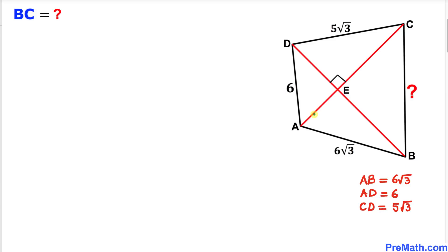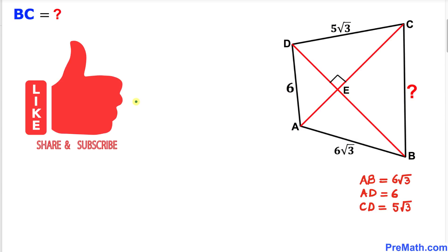Welcome to Pre-Math. In this video tutorial we have quadrilateral ABCD such that its diagonals intersect each other at E and are perpendicular to each other. Side length AB is 6√3, side length AD is 6, side length CD is 5√3, and we are going to calculate side length BC.